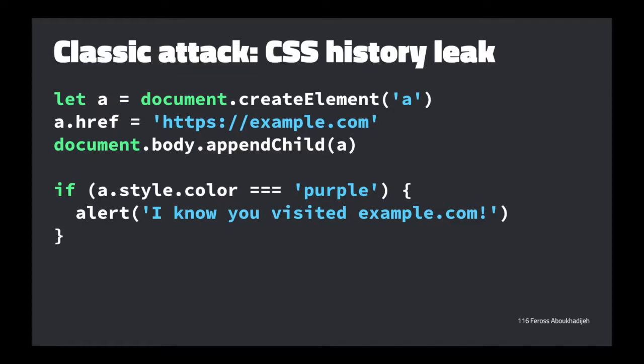Here's one classic attack — almost barely a side channel because it's so basic, but it was a long-standing vulnerability not fixed until 2010. You could create a link, stick it into a page, and check the color the browser rendered the link with. Browsers render visited links in purple and unvisited links in blue by default. By checking the color, you could figure out whether the user had been to a URL. You could iterate through the top million sites and figure out what kinds of sites a user visits.